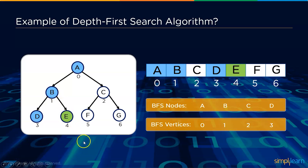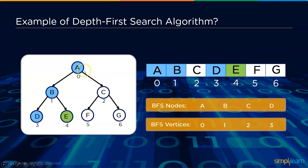From E, there is no further depth — no left or right child — so it backtracks to B and then to root node A. From A it checks the right subtree, visiting C. From C it goes to F; since F has no further vertex, it backtracks to C, then visits G. Since G has no other vertex, it returns to C then to A. DFS uses a stack data structure to maintain traversal order.